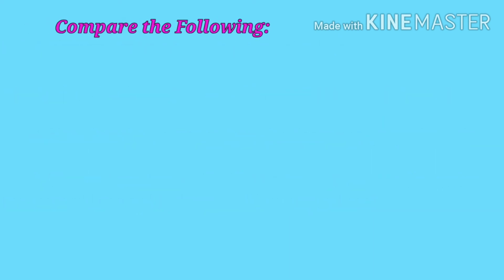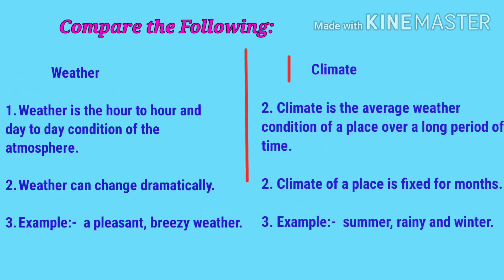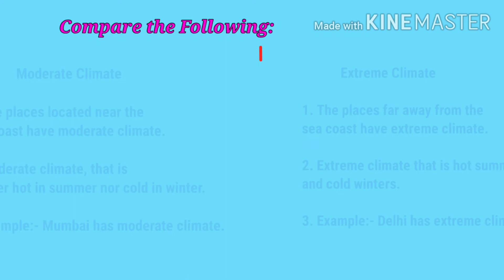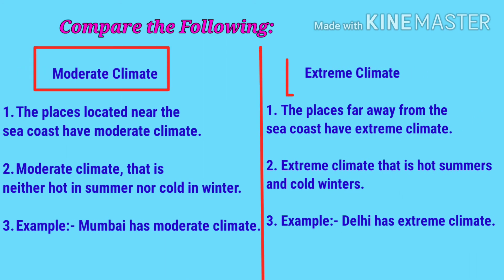Now compare weather and climate. Weather is an hour to hour and day to day condition of the atmosphere — it can change dramatically, for example a pleasant breezy day. Climate is the average weather condition of a place over a long period of time — the climate of a place is fixed for months, for example summer, rainy, and winter seasons.